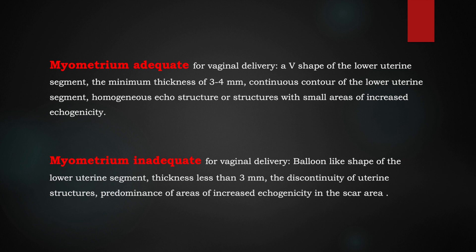In summary, an adequate myometrium or adequate lower uterine segment is considered when there is a V-shape of the lower uterine segment, minimum thickness of about 3 to 4 mm, continuity in the lower uterine segment that is homogeneous, and preferably no areas of increased echogenicity. An inadequate myometrium at risk of rupture presents with a balloon-like shape, thickness less than 3 mm, discontinuity in the uterine structures, and a larger area of increased echogenicity in the scar area — these carry a higher chance of rupture.